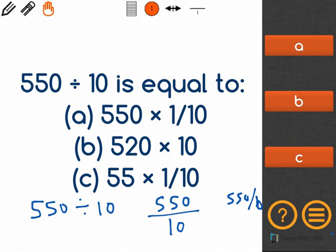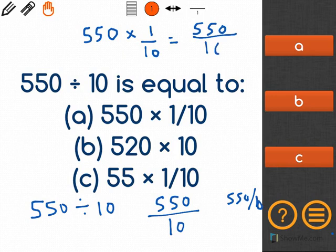Now, if you recall from what we know about multiplying fractions, when we multiply 550 times 1 tenth, we know 550 times 1 remains 550, and 10 will remain on the bottom.